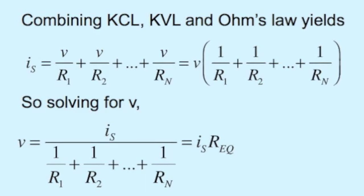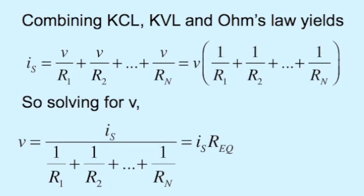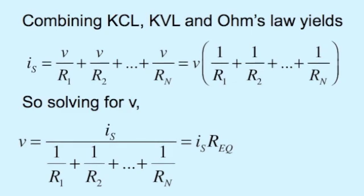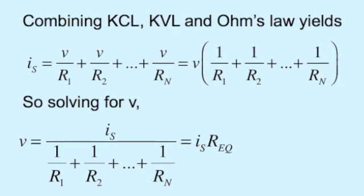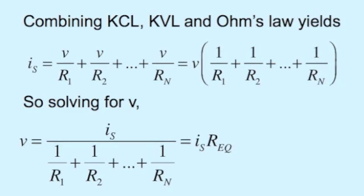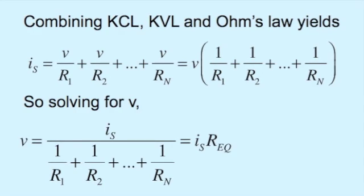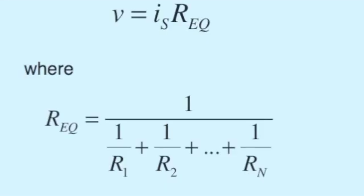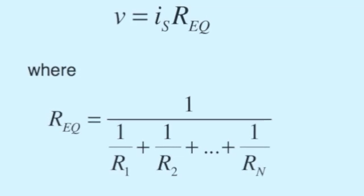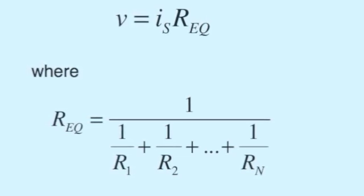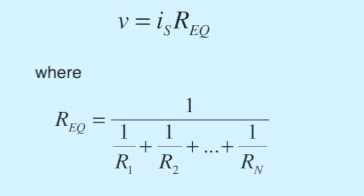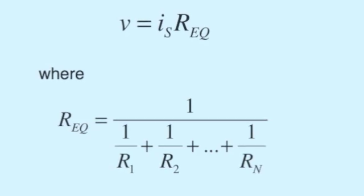We can factor out the V that says Is is equal to V times the sum 1 over R1 plus 1 over R2, etc. Or, we can use Ohm's law and express it as equivalent resistance as follows. We may simply write V equals Is times R equivalent, where R equivalent is 1 over the sum of all those reciprocal resistors.